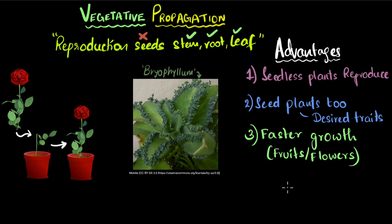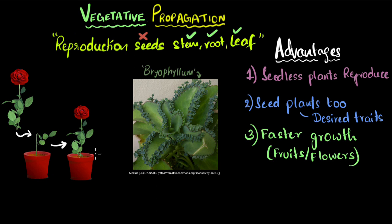So in summary, vegetative propagation is a kind of asexual reproduction which happens from the vegetative parts — stem, roots, and leaves — not from the seeds. A new individual can grow from stems, roots, or leaves. Of course, in some cases you need to provide the right kind of support, but once you do, there are some amazing advantages.